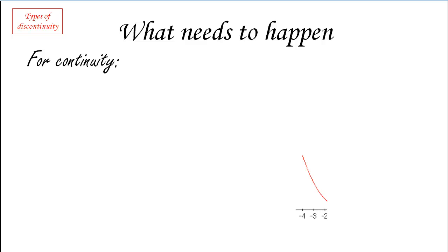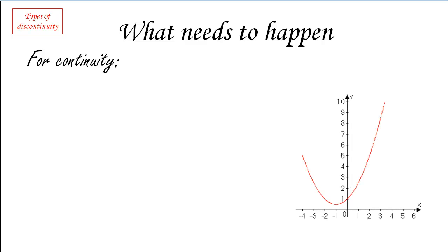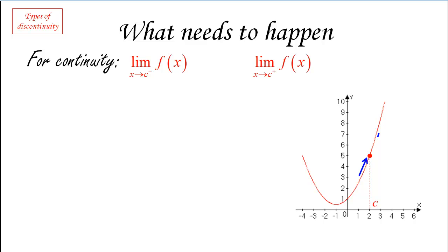For continuity, in order for the function to be continuous at a particular value c, we want the limit as x approaches c from the left and the limit as x approaches c from the right to both exist, and they must equal the value of the function at that point. That's the definition of continuity.